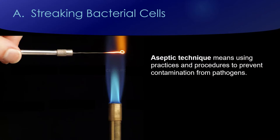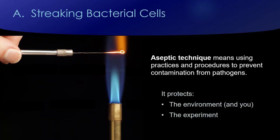What is aseptic technique? Sometimes it's called sterile technique. This is a whole bunch of different practices and procedures basically trying to prevent contamination of your sample. We do this for two reasons: we want to protect the environment — doing everything sterilely so we're not spreading bacteria around the lab or making anyone sick — and we're also protecting our experiment, because there's a lot of bacteria in your breath and on your skin, and you don't want to contaminate your samples.